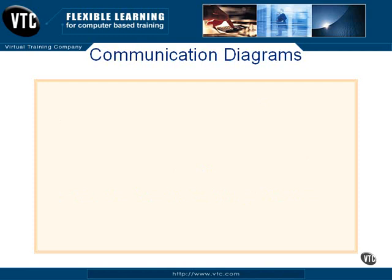Communication diagrams also have a number of strengths and weaknesses. These diagrams emphasize the objects that interact and are an extension of object diagrams. The object diagram shows essentially a snapshot of objects in a system at a particular moment in time, whereas the communication diagram takes that snapshot and puts it in motion, adding the element of time and stretching it out so it's not just one particular instant.